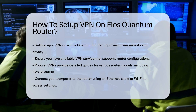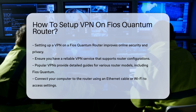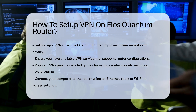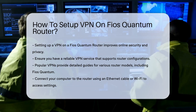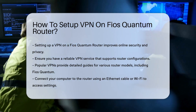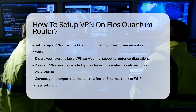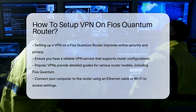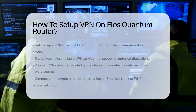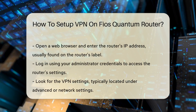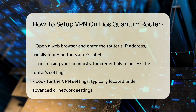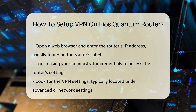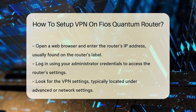Begin by accessing your router's settings. Connect your computer to the router using an Ethernet cable or Wi-Fi. Open a web browser and enter the router's IP address, typically found on the router's label. Log in with your administrator credentials.